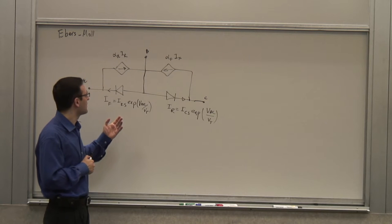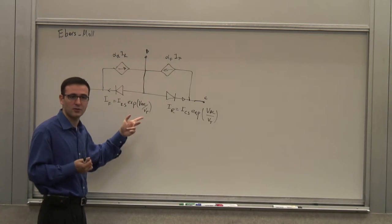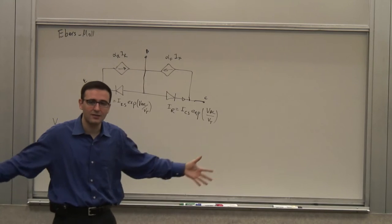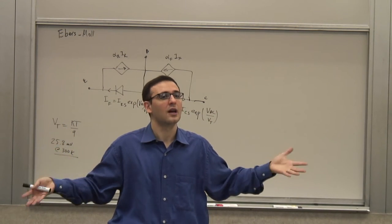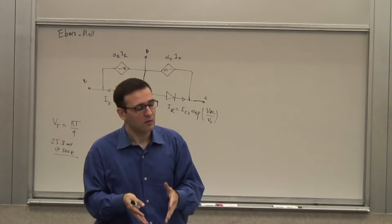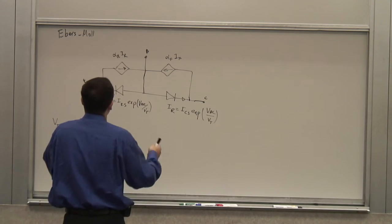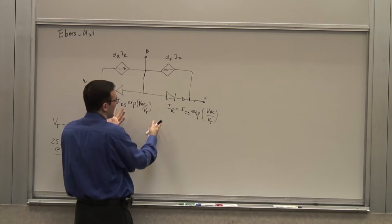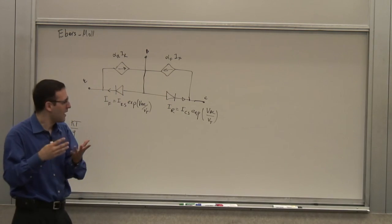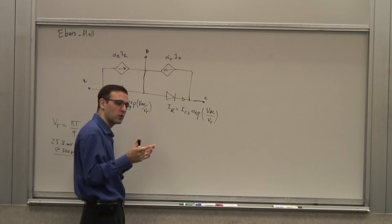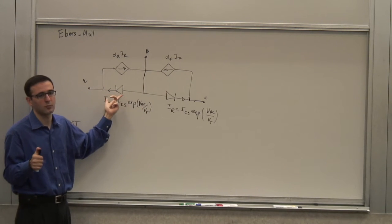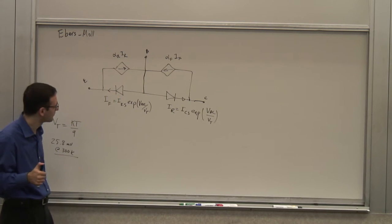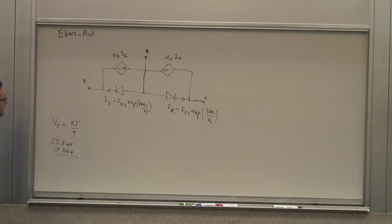There was a fourth mode when both junctions were forward biased. In that case, we injected a tremendous level of carriers — electrons — into the base, and it was pretty much like two forward-biased diodes. The collector-emitter voltage was around 0.1–0.2 V, and the base-emitter was around 0.7–0.8 V. So those were the four modes of operation.